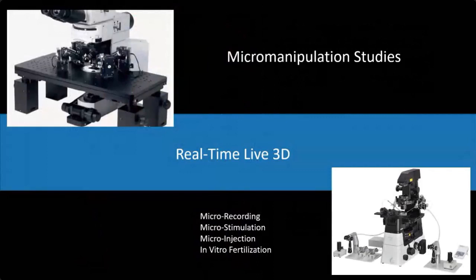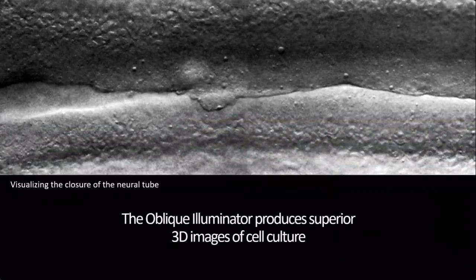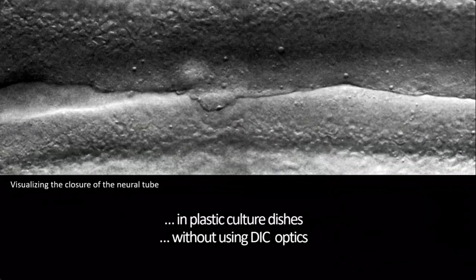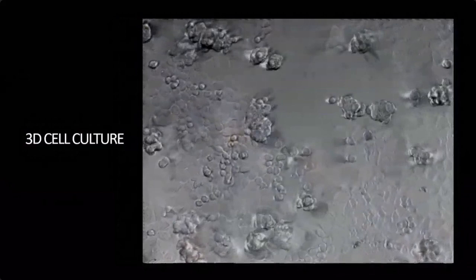One of the other really important things about multiple oblique illumination is the ability to get live, real-time 3D. This is important for micromanipulation, microrecording, in vitro fertilization, 3D cell cultures, and similar applications. The oblique illuminator produces superior images in cell culture — here's the closure of the neural tube using a single oblique illuminator. The oblique illumination also works with plastic dishes, unlike DIC, where the image is destroyed when using plastic dishes. Here are some cancer cells in culture and a 3D cell culture preparation, all visible in 3D, plus a reflected light application for the oblique illuminator.